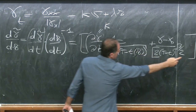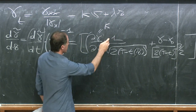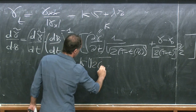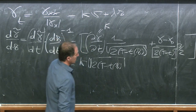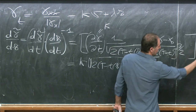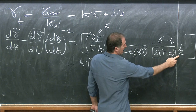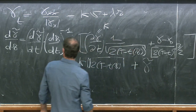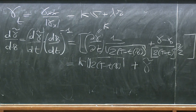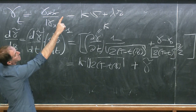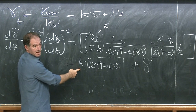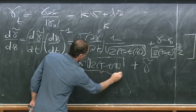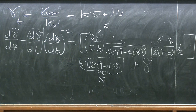Since when you rescale by a factor lambda the curvature is rescaled inversely proportional to lambda, and we are rescaling by 1/sqrt(2(T-t)), the curvature of the rescaled curve k-tilde is exactly sqrt(2(T-t)) · k. So the first term is simply k-tilde, and you get the evolution equation: d(gamma-tilde)/d(tau) = k-tilde + gamma-tilde/2.